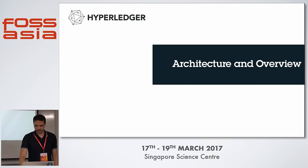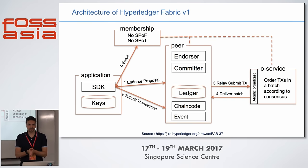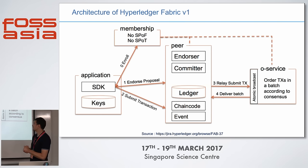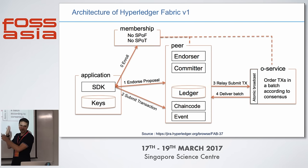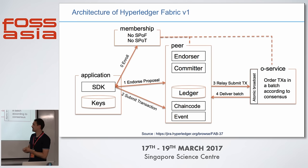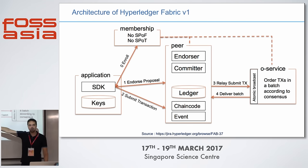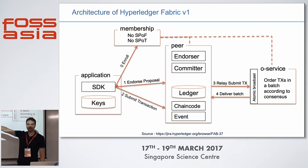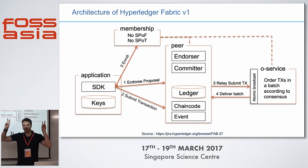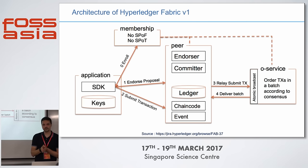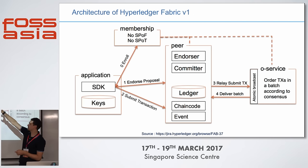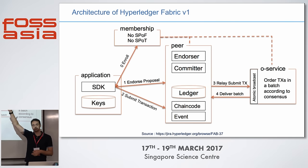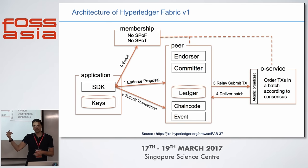Let's go into the architecture overview for version 1. As you can see, the architecture has changed — we have many more components here. The application stays where it was and performs the same thing: business logic and key wallets with the private certificates of the users. The membership service becomes pluggable, and we can have a number of membership services now. So we remove the single point of failure.